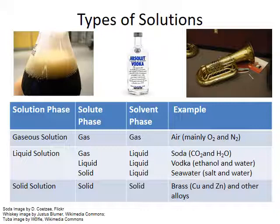Solutions can also be found in solid form. Metallic alloys are homogenous mixtures of different metals, such as copper and zinc in brass. One of the defining characteristics of any mixture is that the different components can be present in any proportion. For example, brass can contain anywhere from 5 to 50% zinc and still be considered brass.